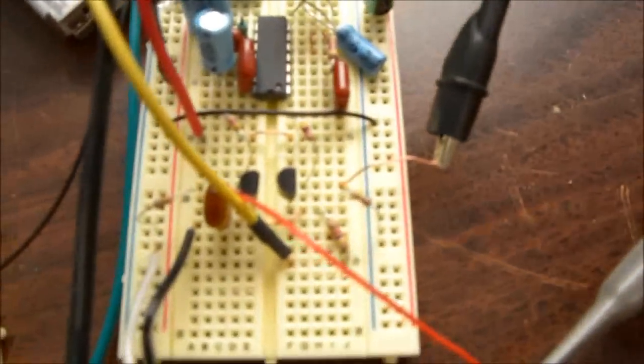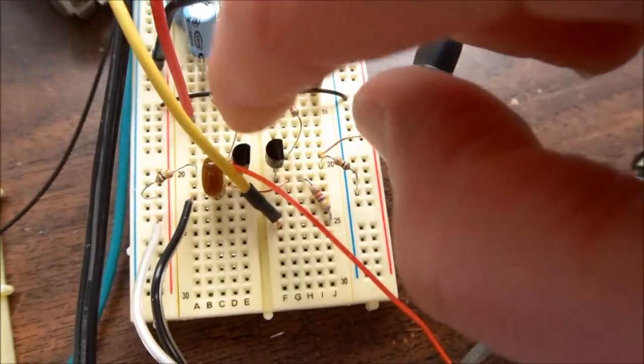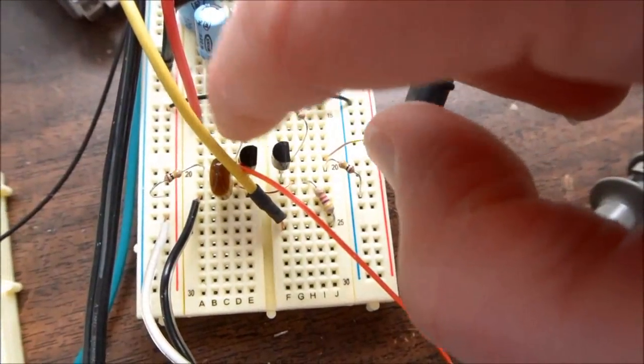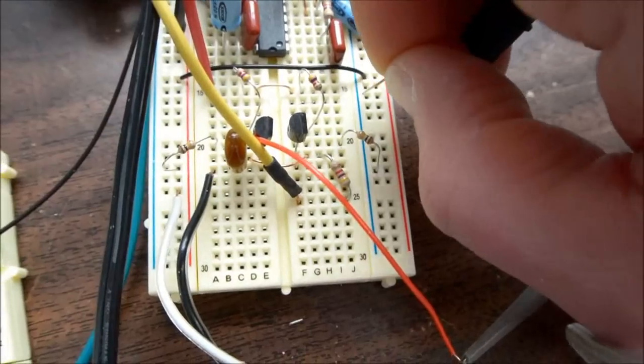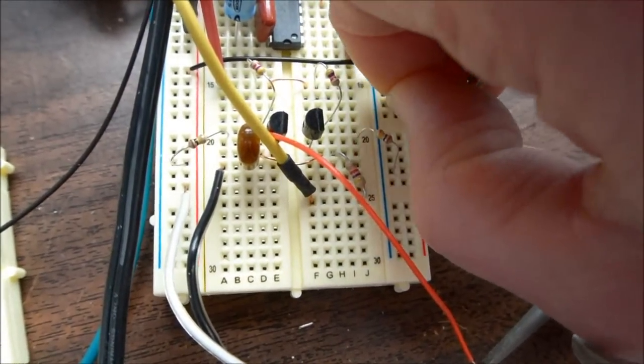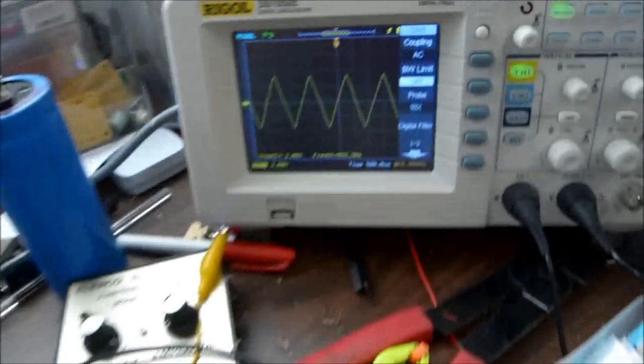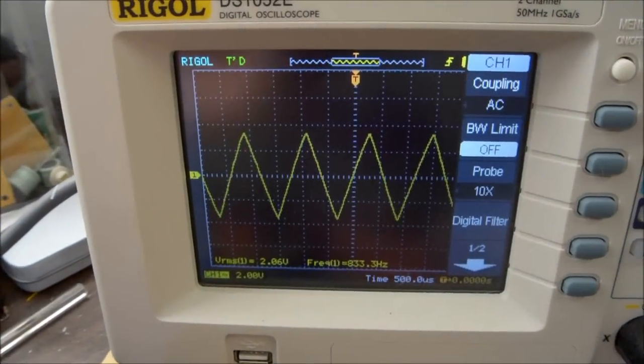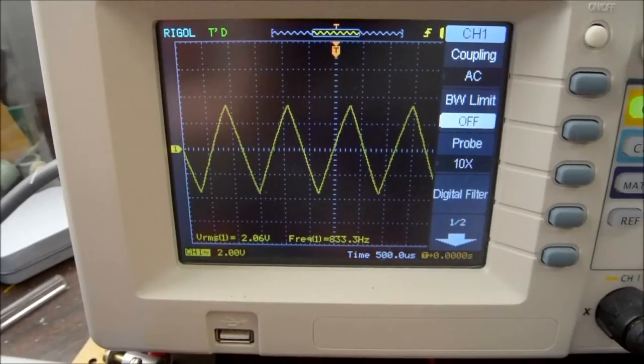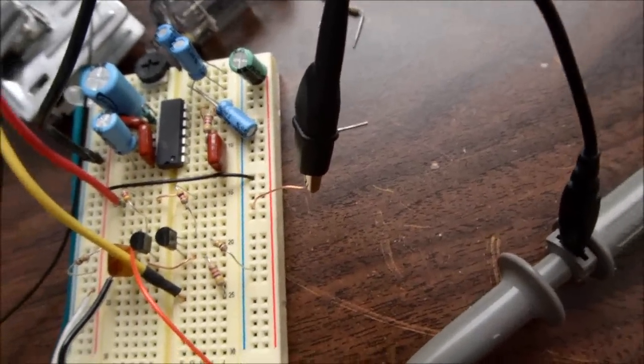But normally, in most circuits, you take the signal off of one transistor. So if I connect one side of the scope to ground, now the output has decreased quite a bit.